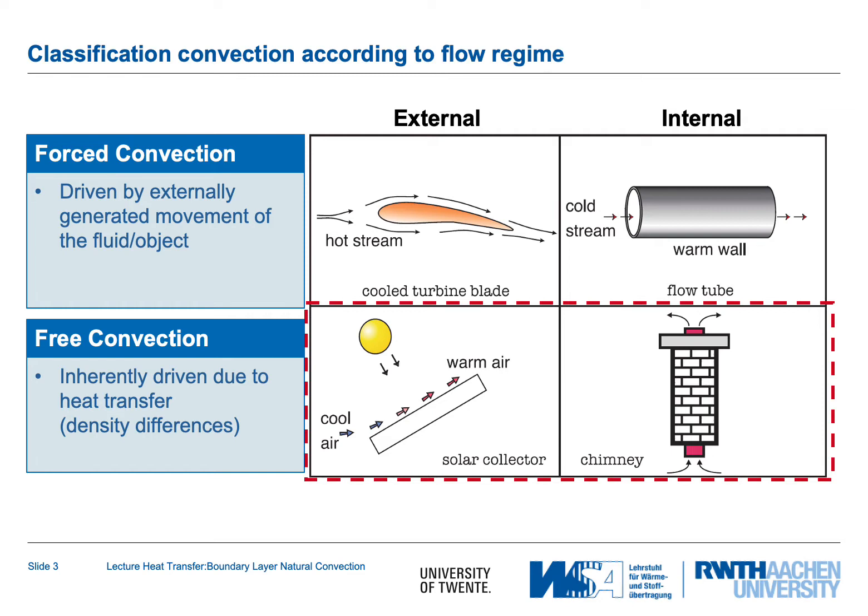We go back to the classification of convection according to the flow regime, distinguishing different regimes. First, we distinguish external versus internal flows — the flow around an object versus the flow inside an object. Then we distinguish forced convection, where the flow is driven by external means, and free convection, where the flow is driven by density differences due to differences in temperature. Free convection is the case we consider in this lecture, with two variations: external and internal free convection.